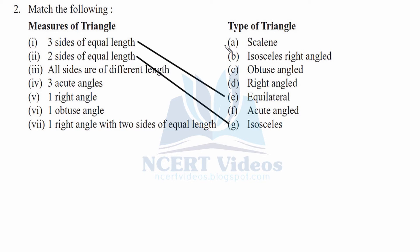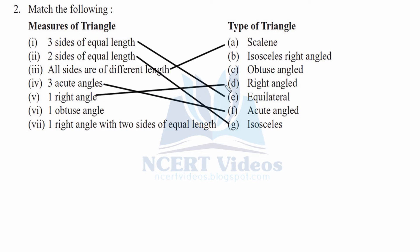Scalene is where all sides are different. Three acute angles match with acute angled triangle. One right angle matches with right angled triangle. One obtuse angle matches with obtuse angled triangle. The last one — one right angle with two sides of equal length — is an isosceles right angled triangle. That was question number two.